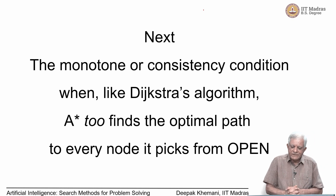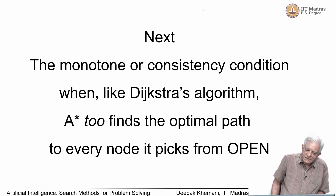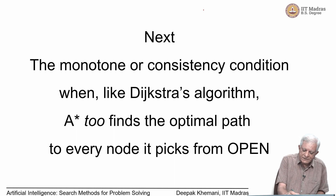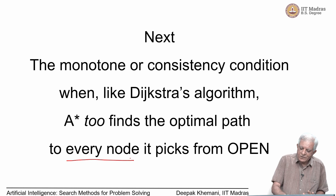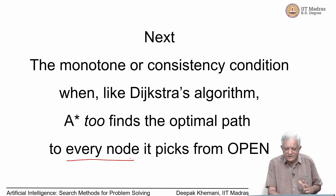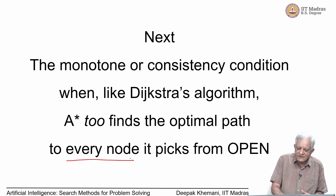Next we will look at the monotone condition, also called the consistency condition — when A* will find the optimal path to every node it picks from open, which is what Dijkstra's algorithm does, and we will see its implications as well.